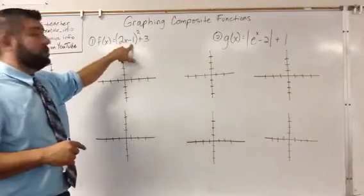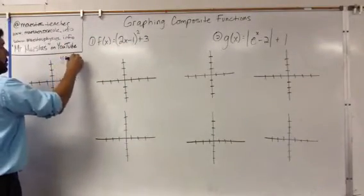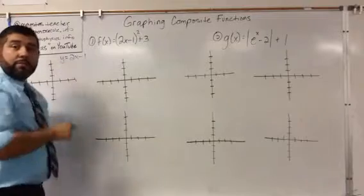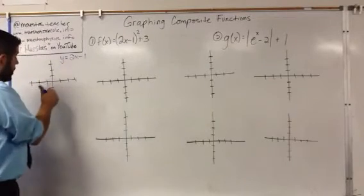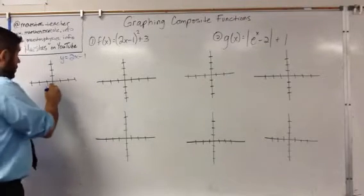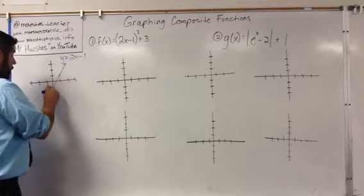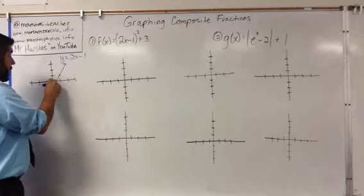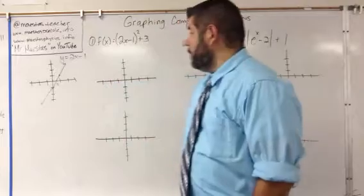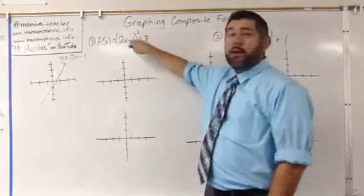So let's start with 2x minus 1. We're going to graph y equals 2x minus 1, and we know that's a line with a y-intercept of negative 1 and a slope of 2. So we start at the y-intercept of negative 1 and use a slope of 2: up 2 and over 1. We want to remember that the x-intercept here is going to be 1/2, which will be important in our next step when we square it.